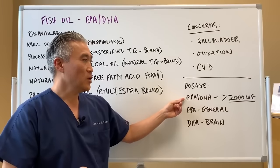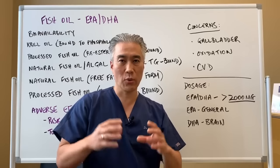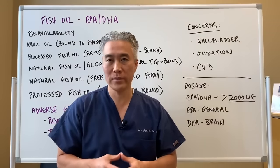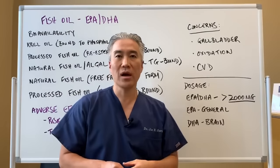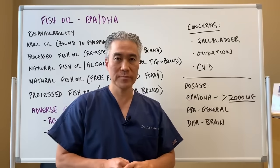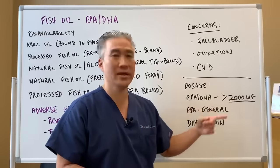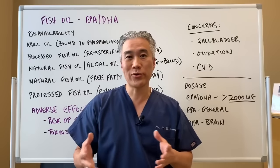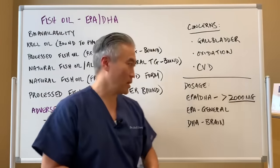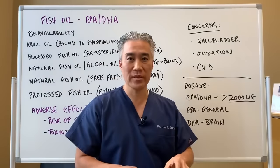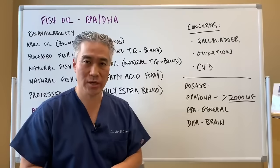Regarding dosages: when you look at a bottle that says 2,000 milligrams of fish oil or omega-3s, that's not what we want. What we want is EPA plus DHA levels above 2,000 milligrams for dosing. A regular child can take up to about 2,000 milligrams of EPA DHA. Adolescents can go to 2,000 to 3,000 milligrams. Adults can go anywhere from 4,000 to 5,000 milligrams of EPA DHA — not just total omega-3, because there are other components beyond EPA and DHA.